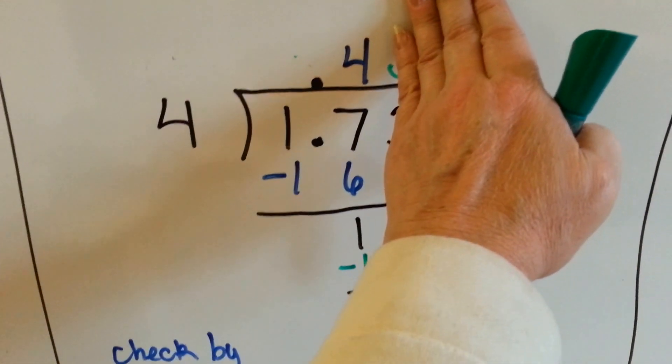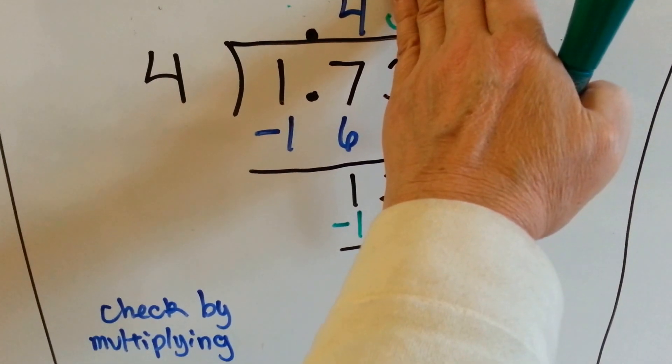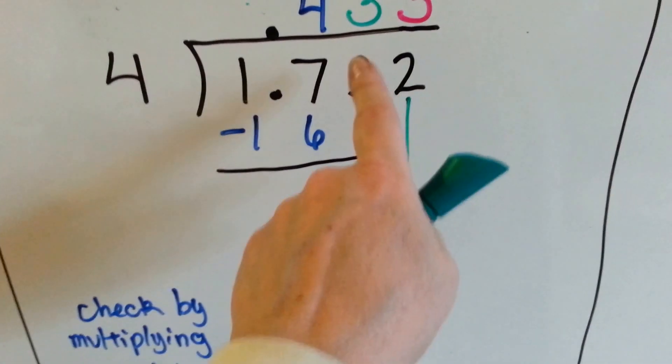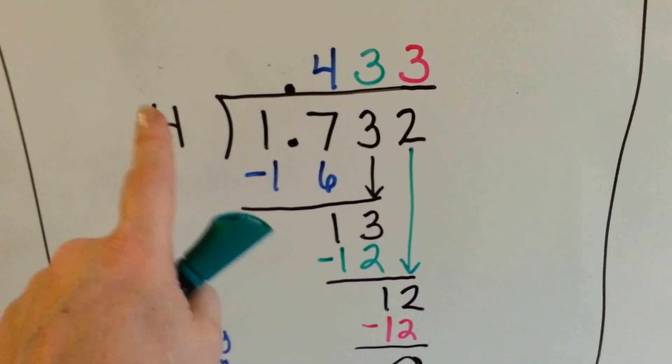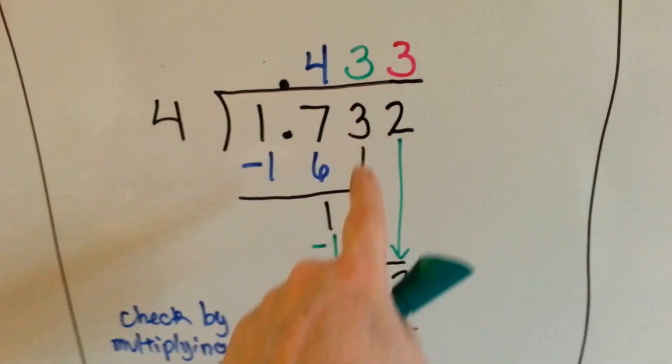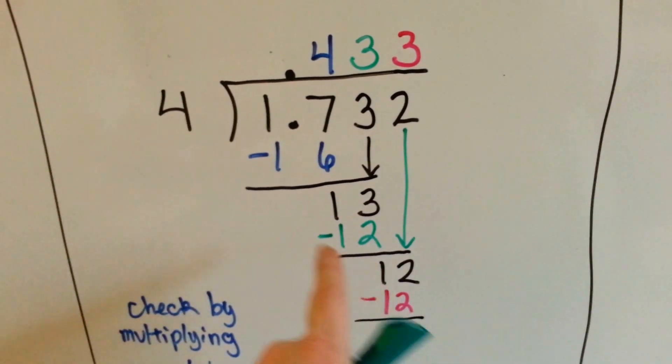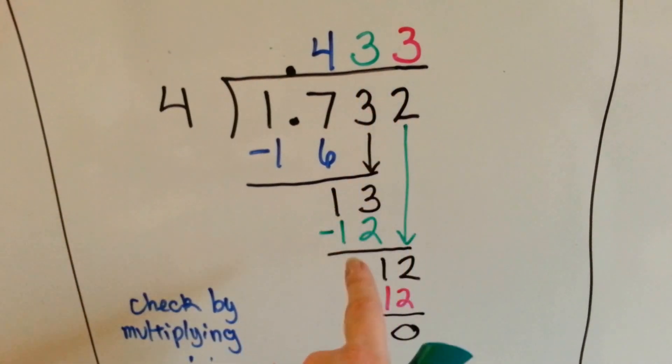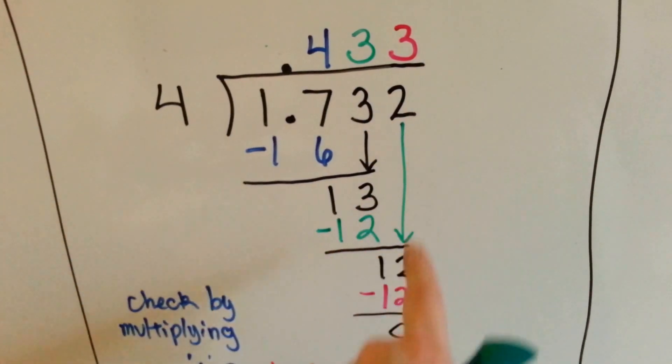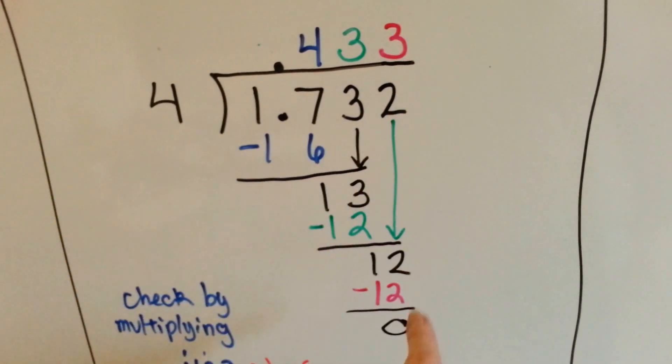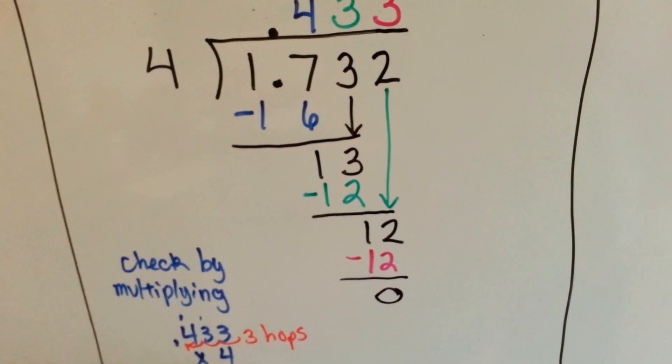So we do our multiplication, we put it down there, do our subtraction, and 17 minus 16 is 1. Now it's the 3's turn to come down. 4 goes into 13, 3 times. See how it goes directly above the 3, because that's what we're dividing? And then that's 12. 4 times 3 is 12. We get 1 left over. It's the 2's turn to come down. And now we have 12 again. We put our 3 up there. We do our subtraction and get 0.